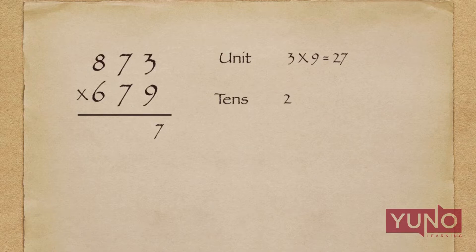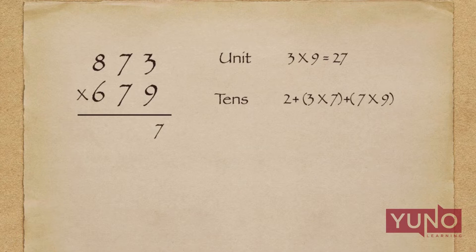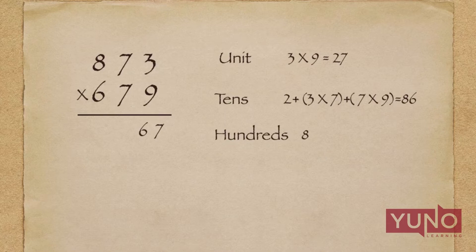In the next step, I will perform the cross multiplication of the last two digits — that is 3 × 7 and 7 × 9 — and add all these multiplications along with the carry. The total will be 86. I will put 6 in the answer and 8 will be the new carry.